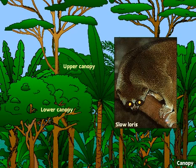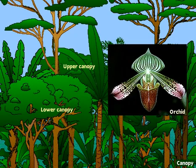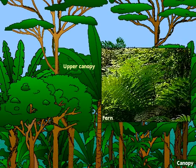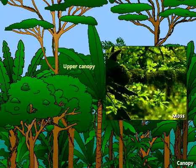The lower canopy is the richest layer in terms of animal and plant life. Most of the mammals that live in the canopy are nocturnal. These higher levels offer a profusion of orchids, bromeliads, ferns, and mosses.